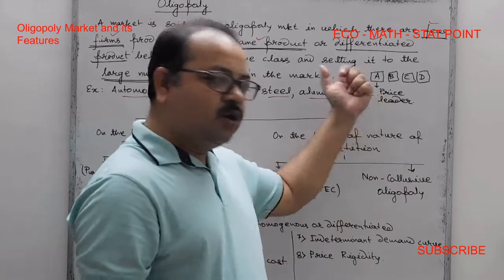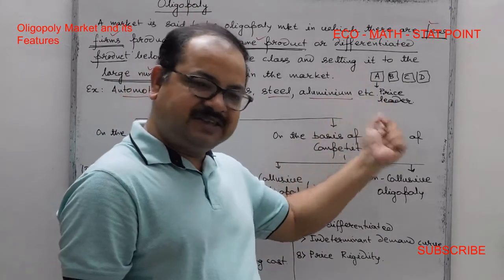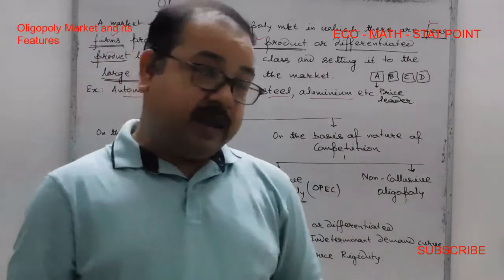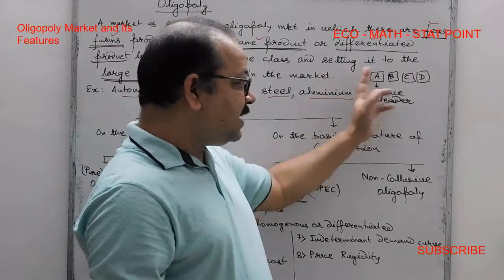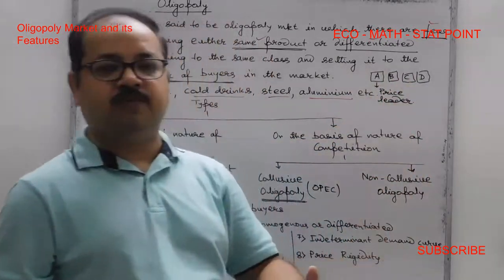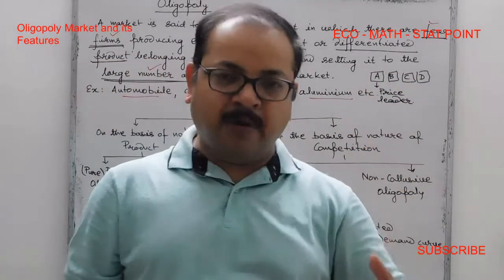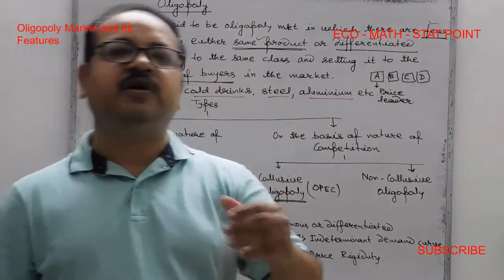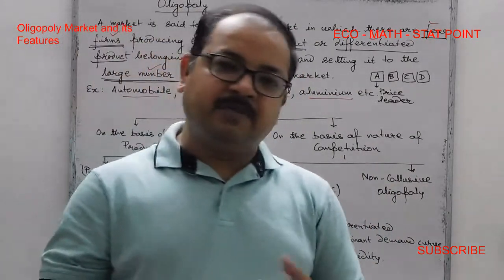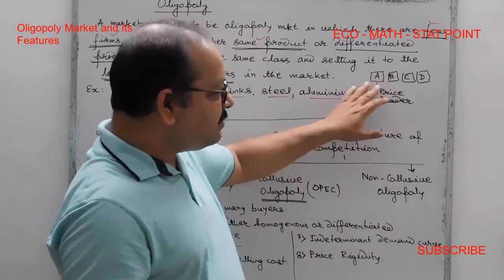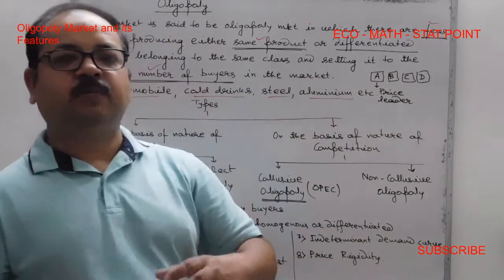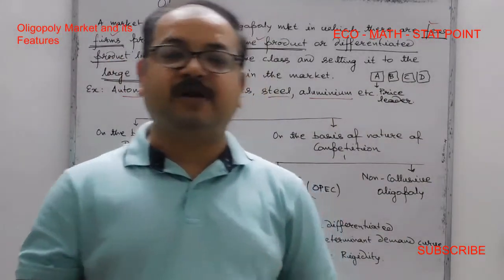When an active firm changes its price-quantity combination, the effect is felt by all other firms, which hold large shares of the market. The other firms will respond with their own decisions, making all firms in the market mutually interdependent.